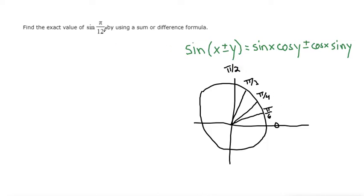Since we're looking for pi over 12, that is an angle that is smaller than pi over six, because remember a fraction, a bigger denominator means a smaller fraction. So pi over 12 will be smaller than pi over six.